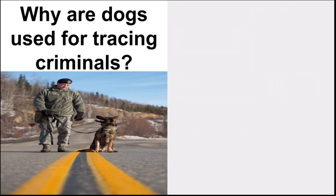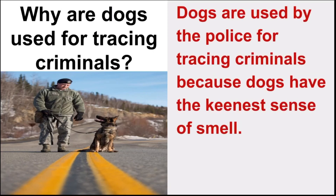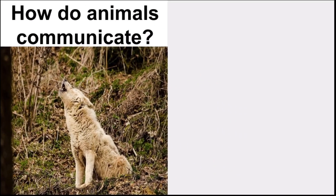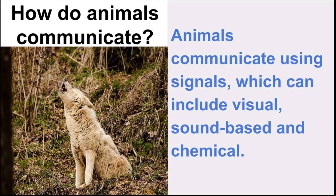Children, why are dogs used for tracing criminals? Answer: Dogs are used by the police for tracing criminals because dogs have the keenest sense of smell. Our next question: How do animals communicate? Answer: Animals communicate using signals which can include visual, sound-based, and chemical signals.